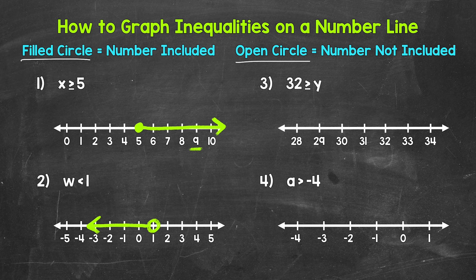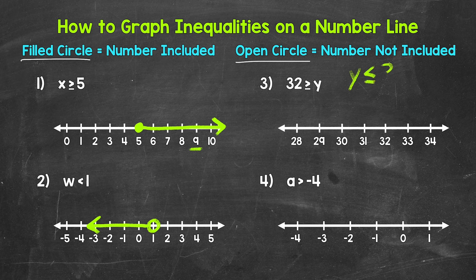Let's move on to number 3, where we have 32 is greater than or equal to y. In other words, looking at this in terms of the variable y: y is less than or equal to 32. We can rewrite this with the variable coming first — this can be helpful when working with inequalities. All we need to do is flip it around, so y is less than or equal to 32. Just make sure to have the sign going the correct way. Here the sign is opening up towards 32, so it needs to stay that way when putting the variable first. y needs to remain less than or equal to 32.